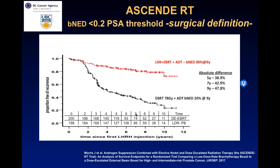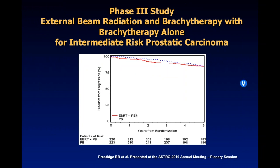The absolute difference was approximately 40% at five years, 43% at seven years, and 48% at nine years — extremely impressive. Additionally, RTOG randomized trial 0232, presented by Dr. Brad Presage, looked at external beam plus an implant boost versus monotherapy in intermediate-risk patients. Preliminary outcomes demonstrate no difference between external beam with a boost versus monotherapy in this trial.